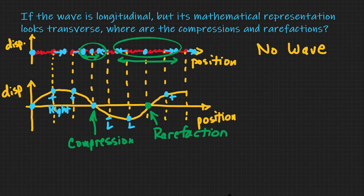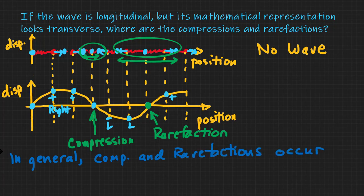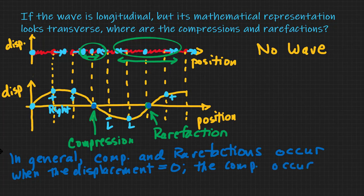So we can summarize this. In general, compressions and rarefactions occur when the displacement is equal to zero. So displacement zero here, displacement zero here. The compressions occur when the slope, see the slope is negative here, when the slope is negative.